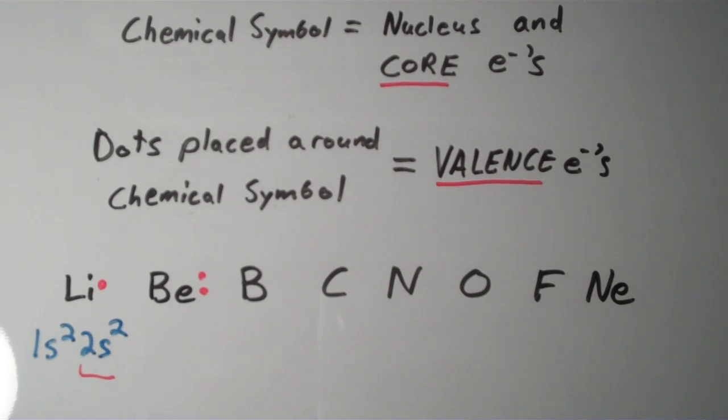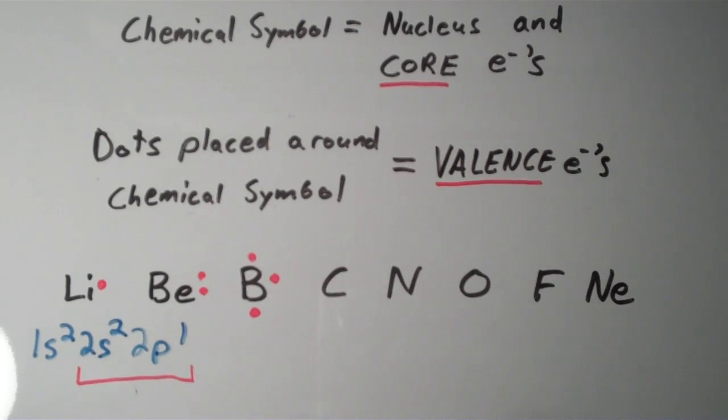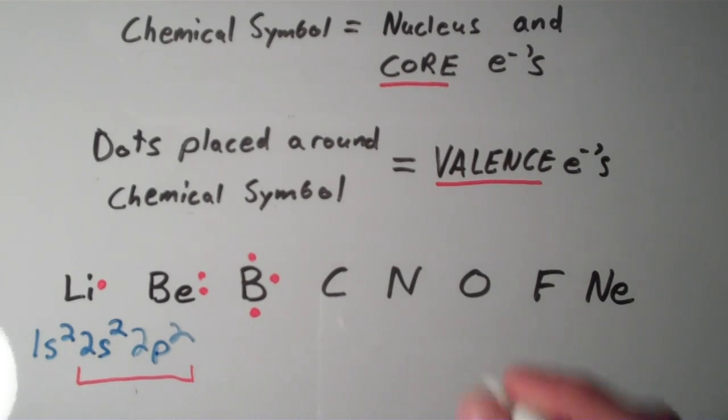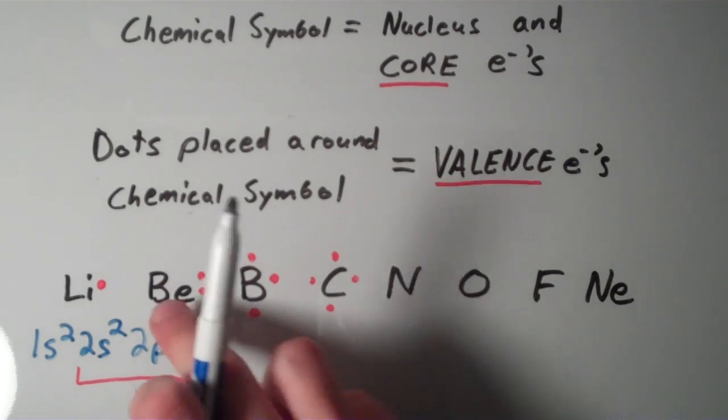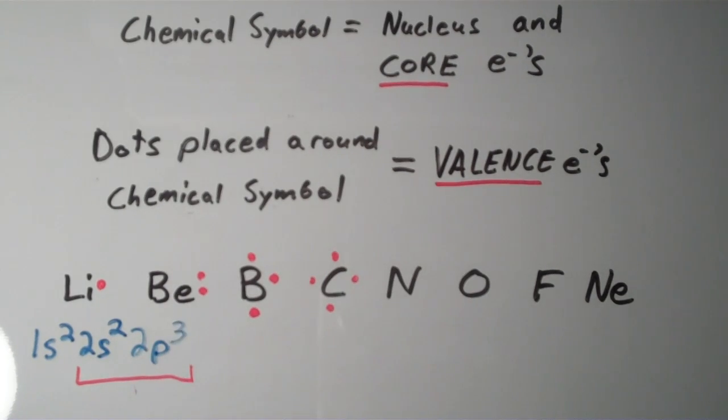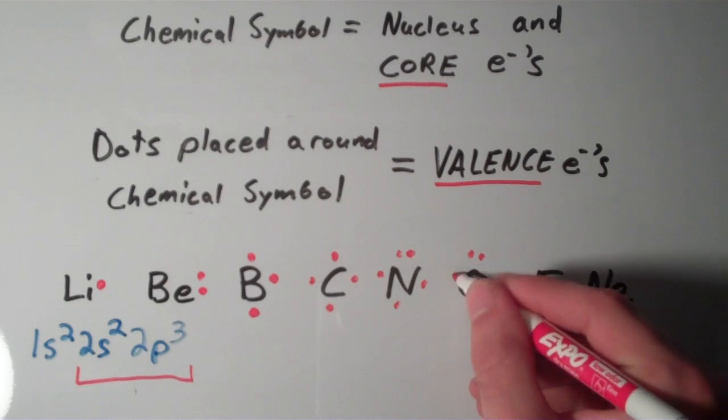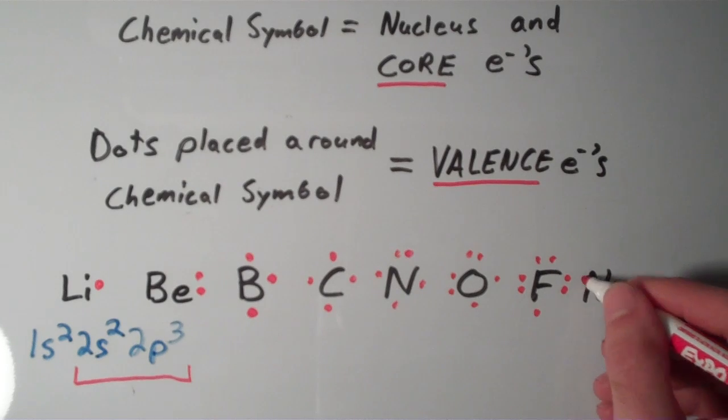Boron has a configuration of 1s², 2s², 2p¹, when this whole shell is the valence shell. So there's 3 valence electrons here on boron. Carbon has 1s², 2s², 2p², so 4 valence electrons. Nitrogen, 1s², 2s², 2p³, so that means we got 5 valence electrons. And I'm sure you can see the pattern. We will have 6 valence electrons here, we will have 7 here, and on neon we will have 8.